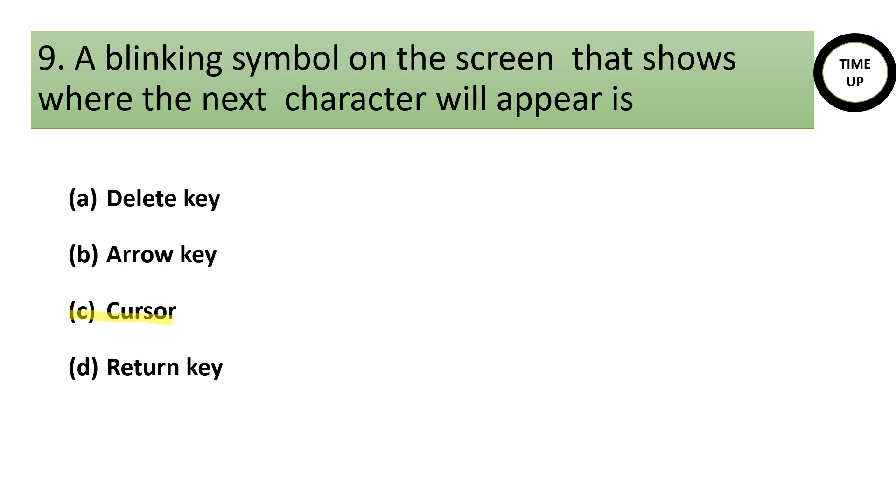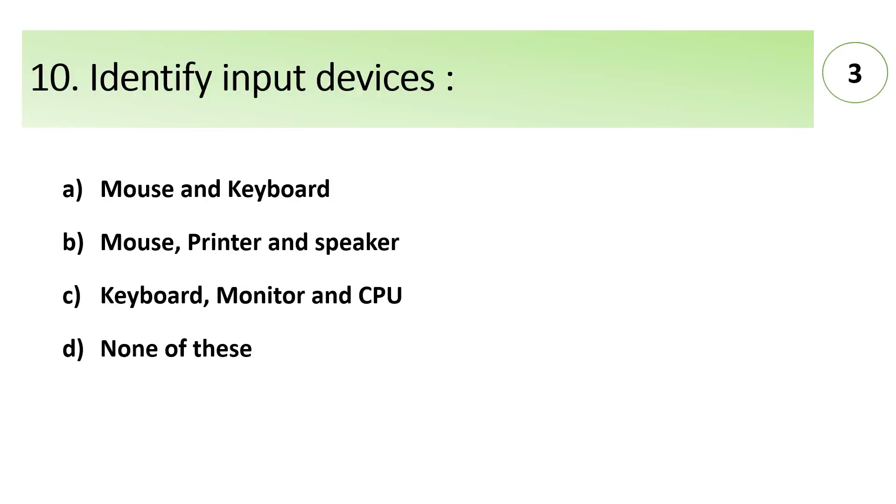Identify input devices. A. mouse and keyboard, B. mouse printer and speaker, C. keyboard monitor and CPU, D. none of these. Answer is A. mouse and keyboard are input devices. Here printer and speaker in option B are output devices, monitor is also an output device while CPU is a processing device.